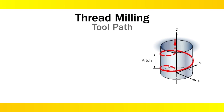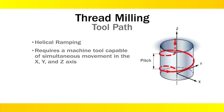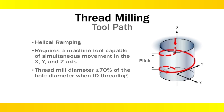To produce a thread, thread milling helical ramps a feature with each revolution equaling the pitch of the thread desired. This requires the use of a machine tool capable of simultaneous X, Y, and Z axis movement. Also, when selecting a thread mill for an ID thread, the diameter of the thread mill should be no more than 70% of the diameter of the hole.